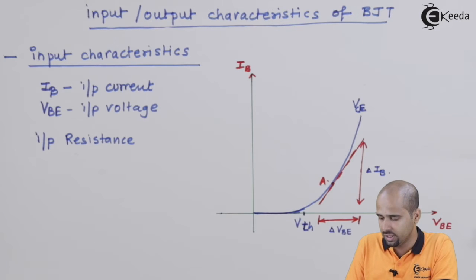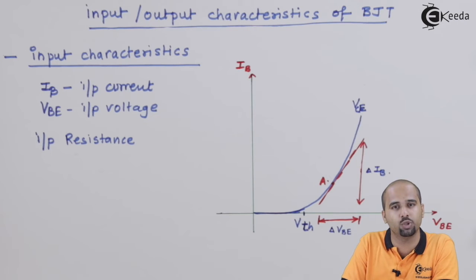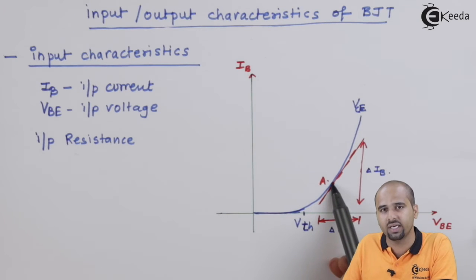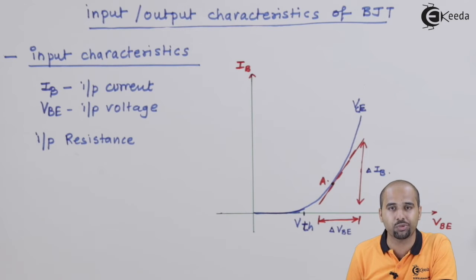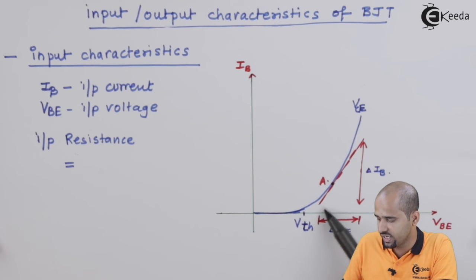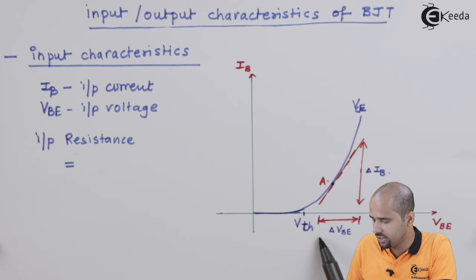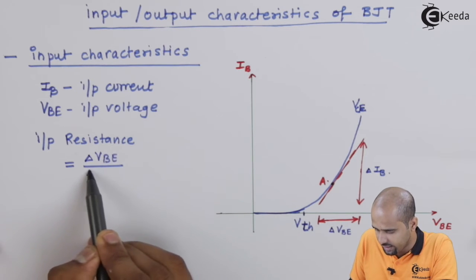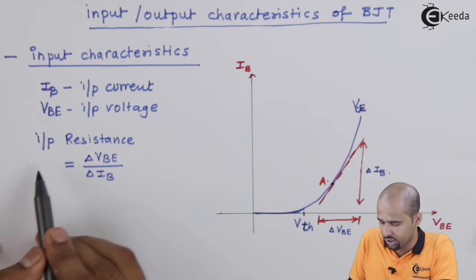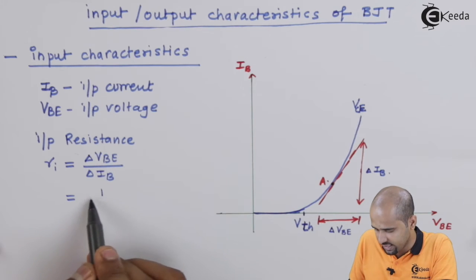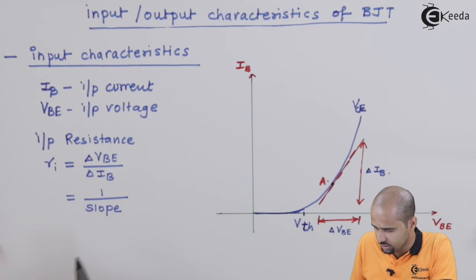Considering Ib and Vbe as input current and voltage in the CE mode configuration of BJT, I am taking point A on the curve. That gives the instantaneous input resistance, also called dynamic input resistance, calculated by taking the inverse of the slope of the tangent at that point — that is delta Vbe divided by delta Ib — and that is the input impedance.